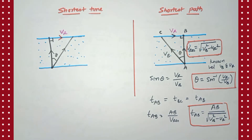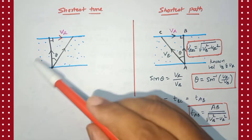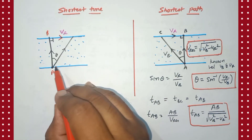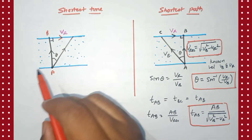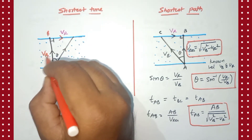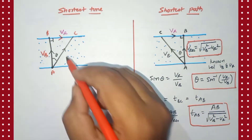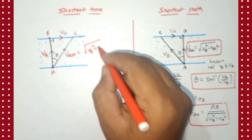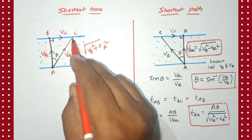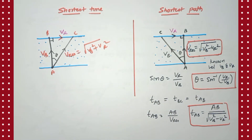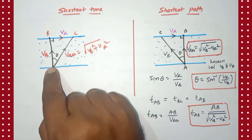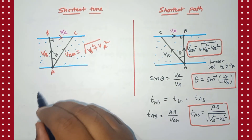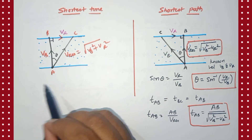Now for the shortest time case: the boat has to reach from A to B in the shortest possible time. It takes the help of the river flowing towards the right. If the boat is kept along AB, the river pushes it towards the right and takes it along AC. The resultant velocity by Pythagoras theorem is √(vb² + vr²).